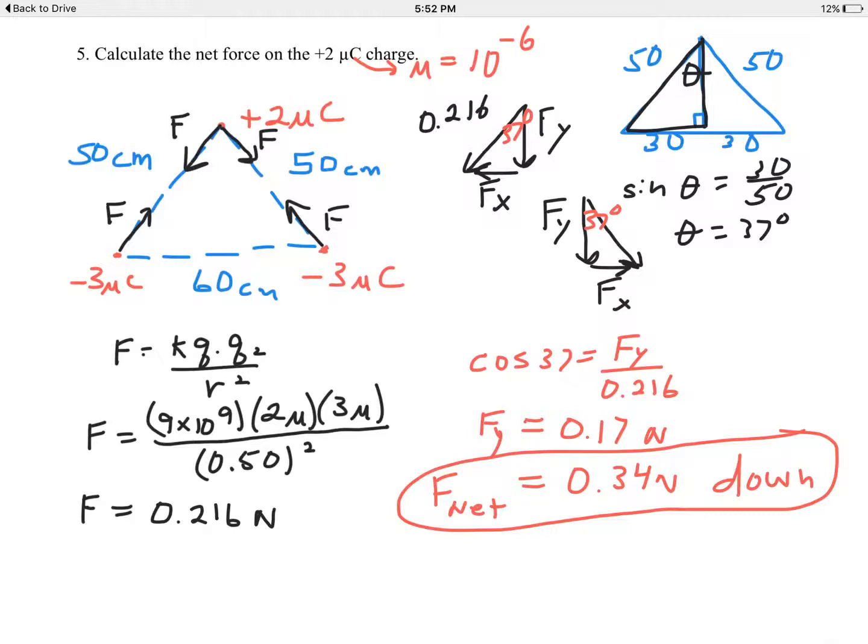This problem would be much more difficult if we had to find the net force on either one of the two base charges—the negative three—even though they'd have the same net force on each other. The vector addition will be quite a bit more complicated because there'll be no cancellation of any sideways charges. But luckily we don't need to do that right now. There's the net force on the top charge—that's what we were asked to do and we've done it.